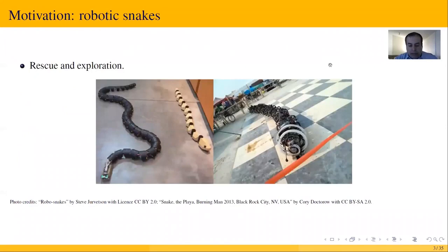Snakes are fascinating animals that can move through different surfaces, can swim, even they can fly. For this reason, the scientific community has been motivated to design and build robotic snakes for exploration and rescue purposes. This work is motivated by their motion, which is known as undulation.